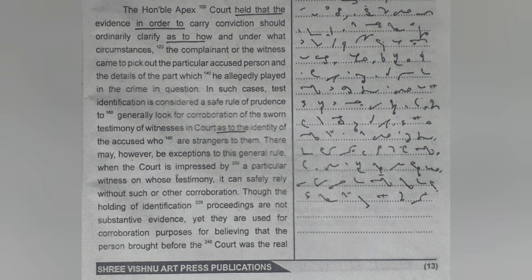It is generally prudent to look for corroboration of the sworn testimony of witnesses in court as to the identity of the accused who are strangers to them. There may however be exceptions to this general rule when the court is impressed by a particular witness on whose testimony it can safely rely without such or other corroboration.